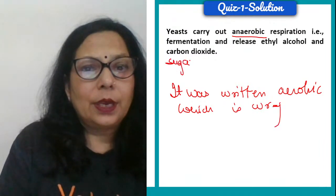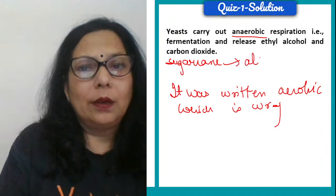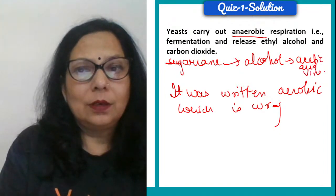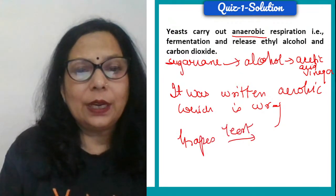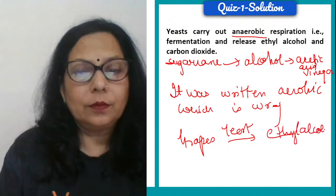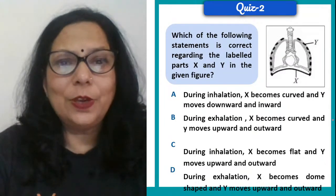Sugar cane gets fermented to alcohol and then to acetic acid — vinegar. Grapes, in the presence of yeast, get converted into ethyl alcohol. Now moving on to the next question.